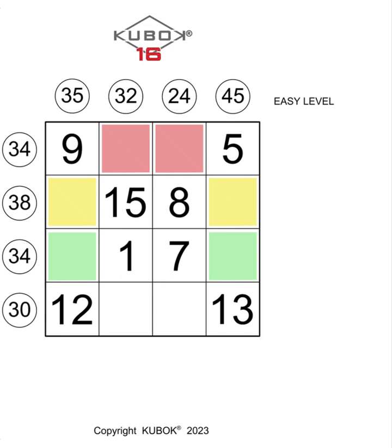In the case of version 16 level easy, the game layout always has two numbers in each row and column, therefore it is necessary to find the other two missing numbers.